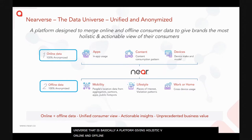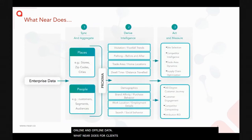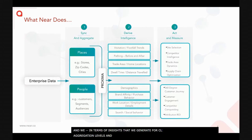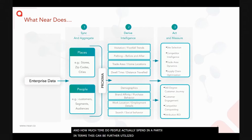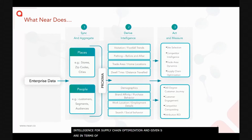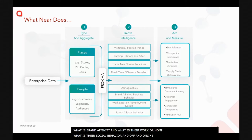When we have the data, we run models and generate insights for clients at two aggregation levels. At the places level, we give intelligence on footfall, mobility patterns around a place, home location catchment, and time spent — which clients use for site selection, competitor intelligence, and supply chain optimization. At the people level, clients can see demographics, brand affinity, work and home locations, and social behavior.